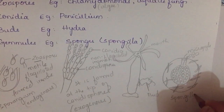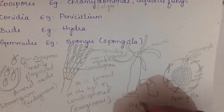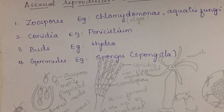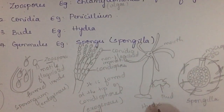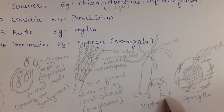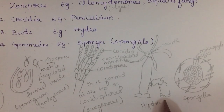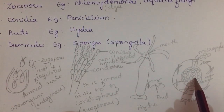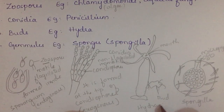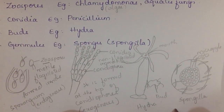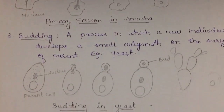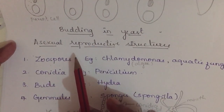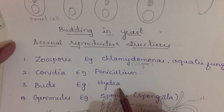To recap: sponges produce gemmules, hydra produces buds, Penicillium produces conidia, and Chlamydomonas produces zoospores. A question for the comment box: are the buds of hydra and the gemmules of sponges endogenous or exogenous? These asexual reproductive structures are frequently asked in exams.